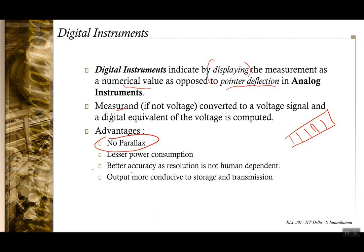Digital instruments have better accuracy compared to analog instruments. Since the final output is a digital signal, it can be displayed, transmitted, and stored. This is in contrast with an analog instrument where the display is a mechanical deflection, which cannot be easily stored or transmitted without significant loss.